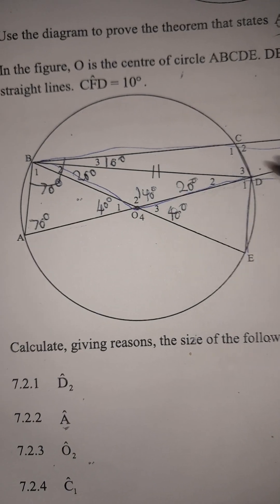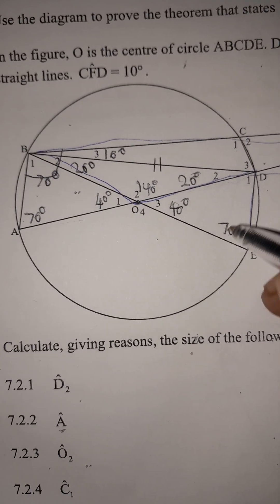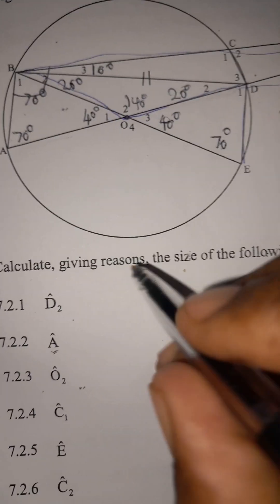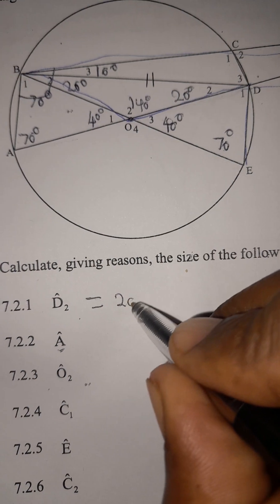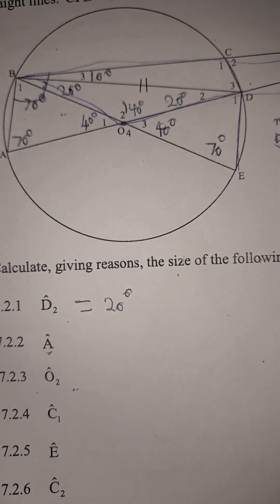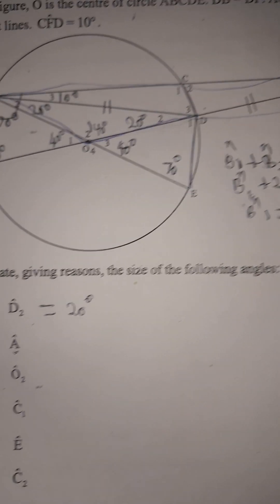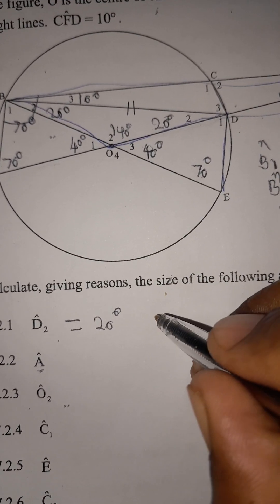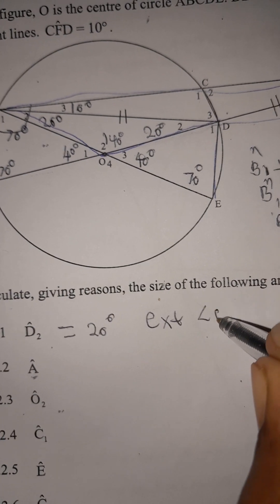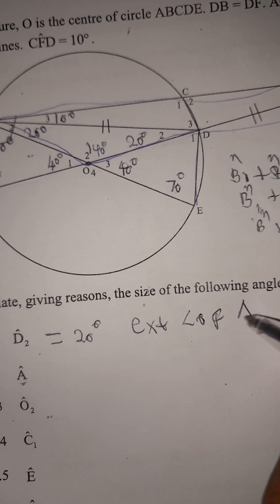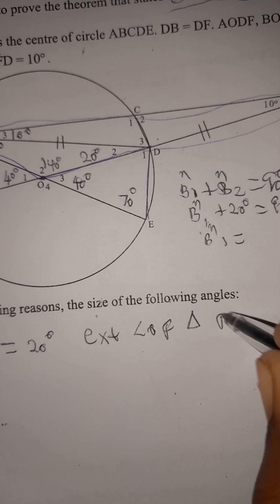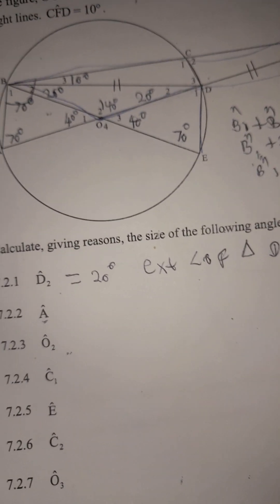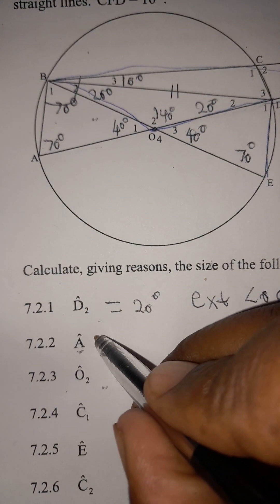Now let's start writing the answers. Angle D2 equals 20 degrees. The reason: exterior angle of triangle BDF.